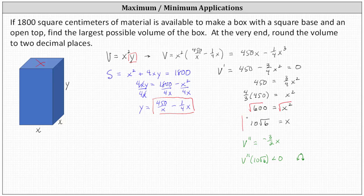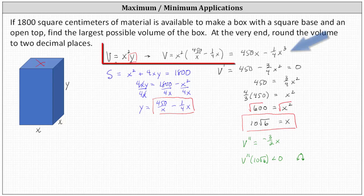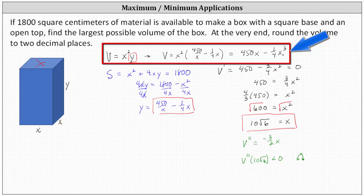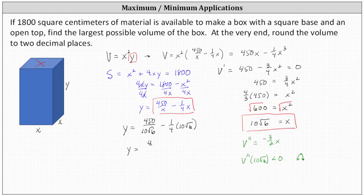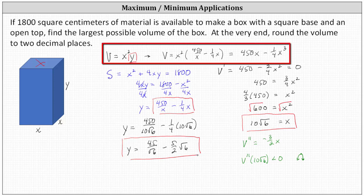Now that we know the x value that maximizes the volume, we can find the volume using the formula V equals 450x minus one-fourth x cubed. If your problem asks for the dimensions, y equals 450 divided by x minus one-fourth x. So y equals 450 divided by 10 root 6, minus one-fourth times 10 root 6, which simplifies to 45 divided by root 6, minus five-halves root 6. We can compute the volume using either formula; using the original formula V equals x squared times y.